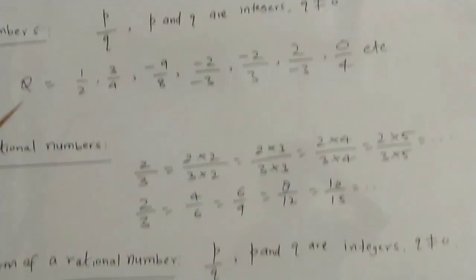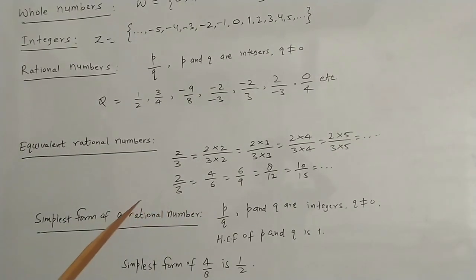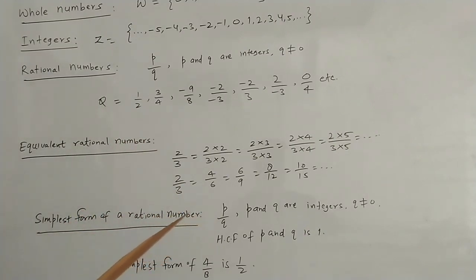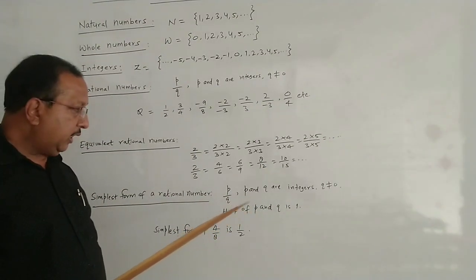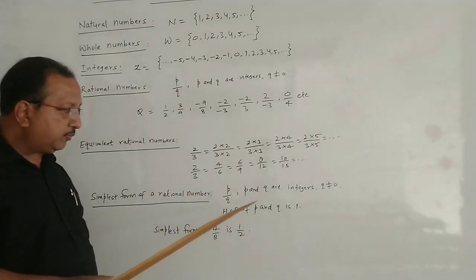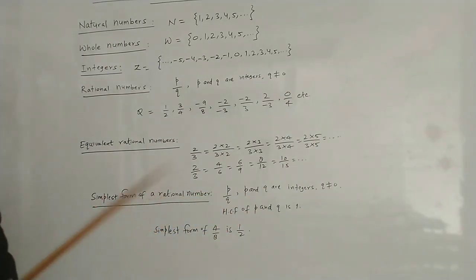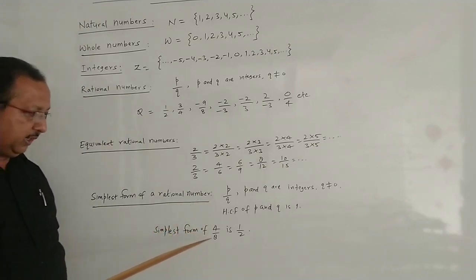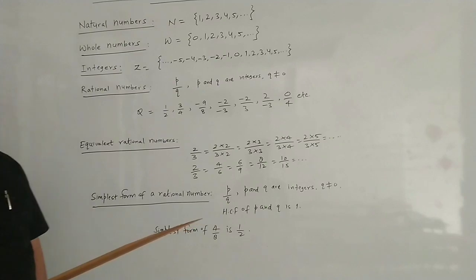Then comes the simplest form of a rational number. By definition, a rational number is P upon Q where P and Q are integers and Q is not equal to 0. One more condition is added: the HCF of P and Q must be 1. For example, the simplest form of 4/8 is 1/2, dividing both numerator and denominator by 4.